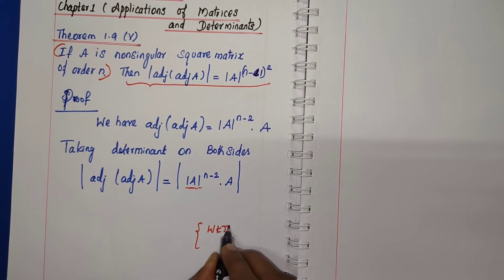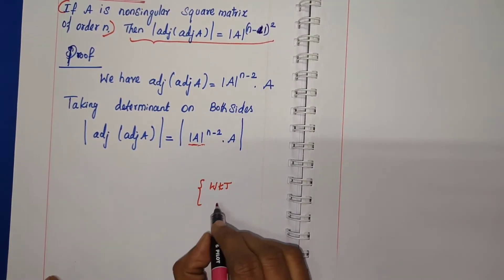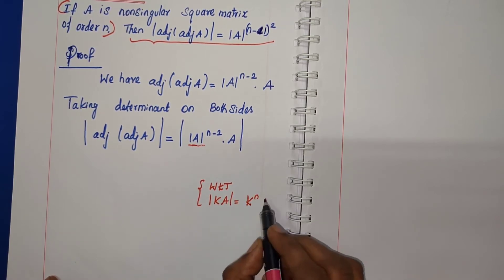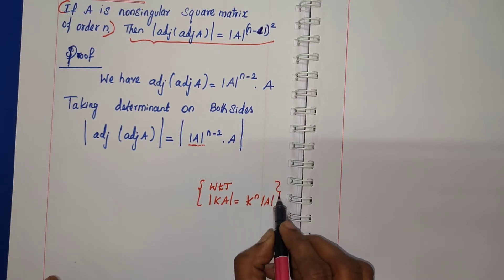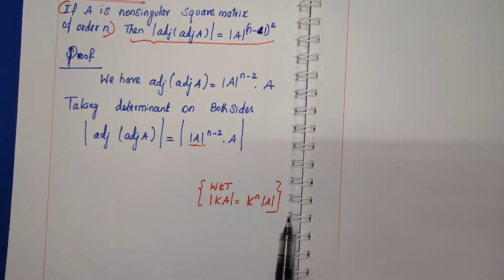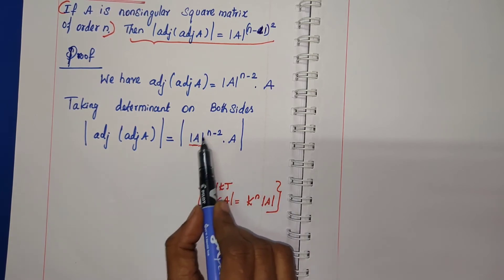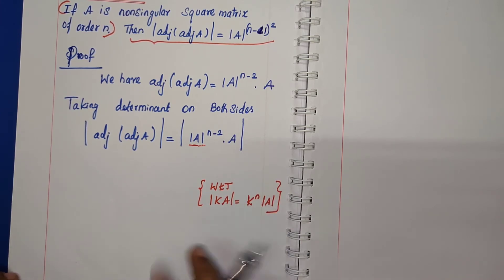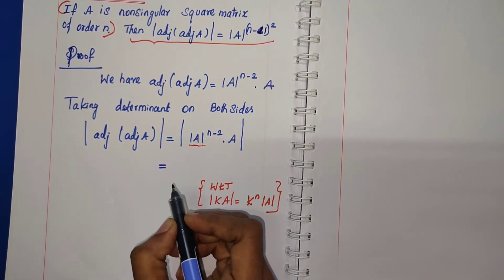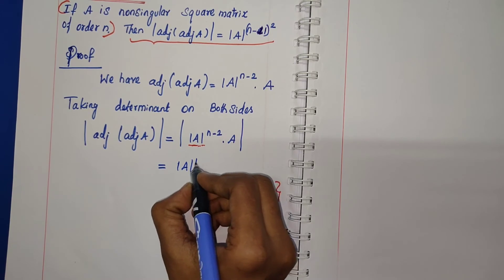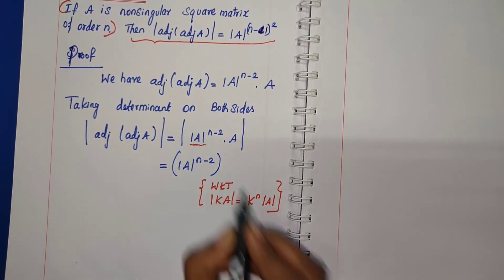We know that determinant of kA is equal to k power n times determinant A, where n is the order and k is a scalar. Using this result, since det(A)^(n-2) is a scalar, we can bring it out as [det(A)^(n-2)]^n times determinant A.